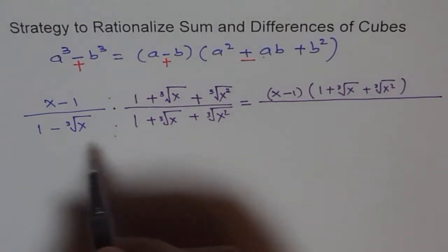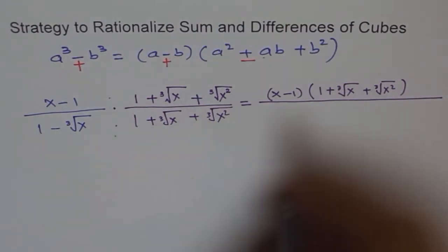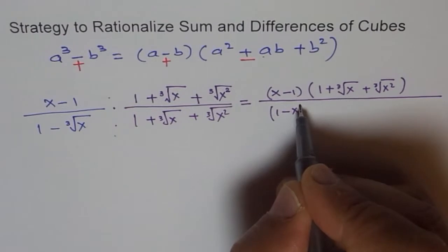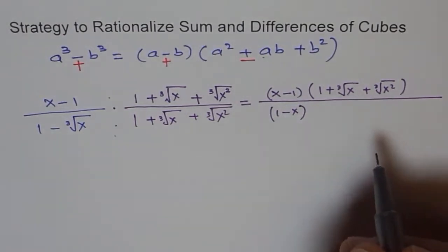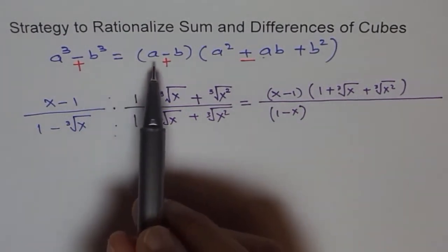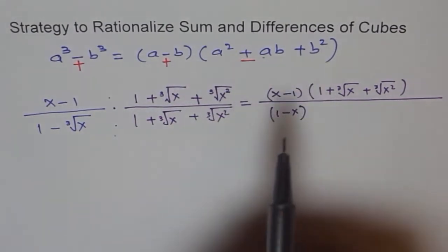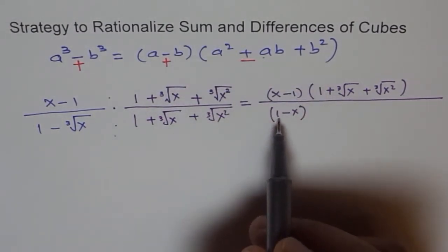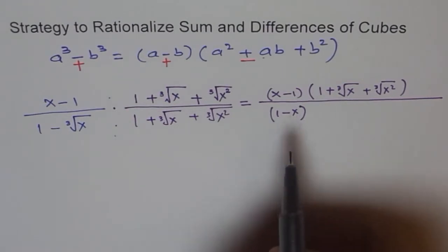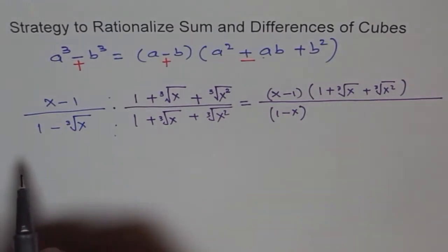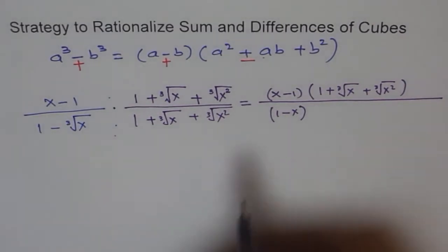And here I get 1 - x. Because (a - b)(a² + ab + b²) gives me a³ - b³. So b³ is in this case cube of cube root of x. Do you see that? So we just get this x. Do you understand?